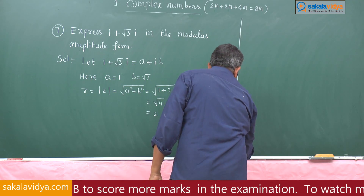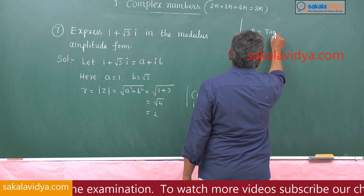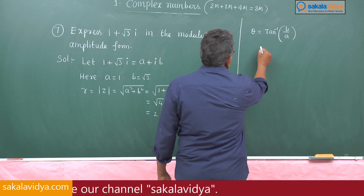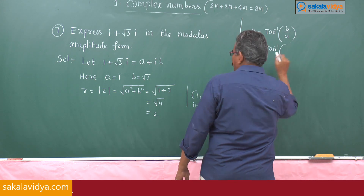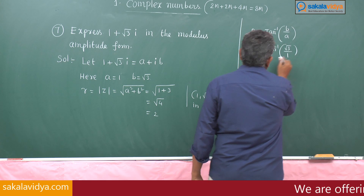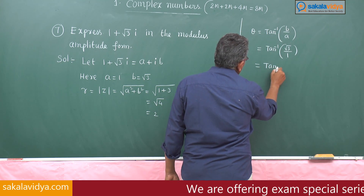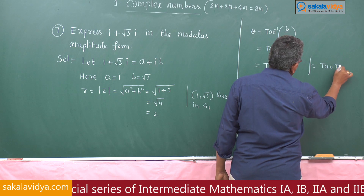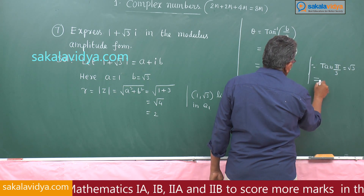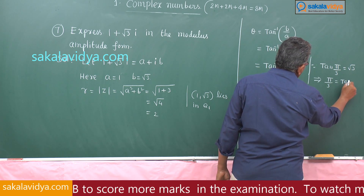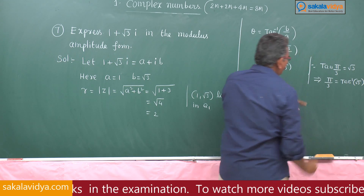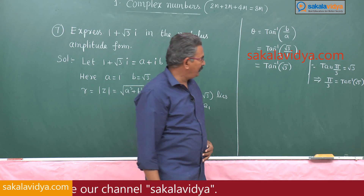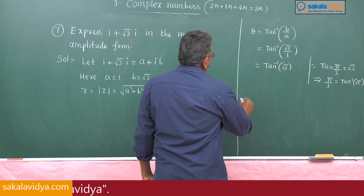Now for the amplitude: theta equals tan inverse of b by a, substituting b equals root 3 and a equals 1, giving tan inverse of root 3. We know that tan 60 degrees, or pi by 3, equals root 3. So theta equals pi by 3, which lies in the first quadrant.